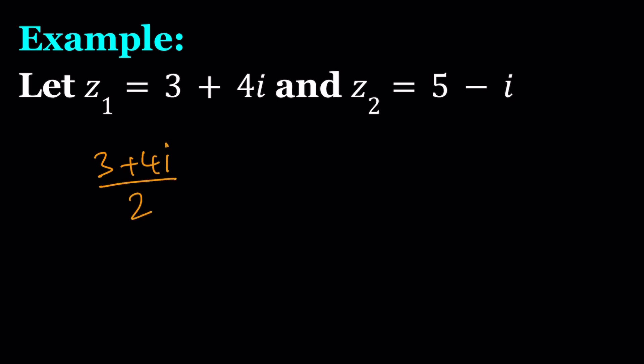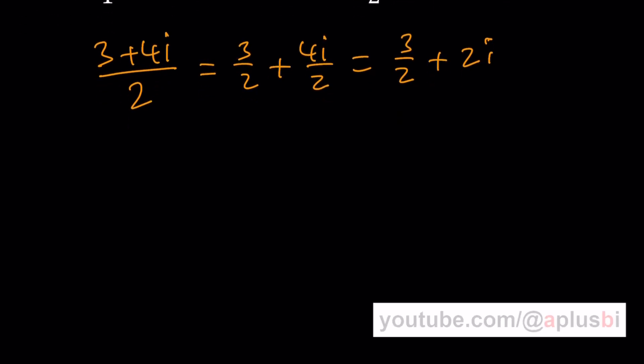For example, if you take something like 3 plus 4i and divide it by 2, what happens? Here's what happens: you can go ahead and separate it into 3 over 2 plus 4i over 2, and this just becomes 3 over 2 plus 2i. It becomes a complex number again, but the real part is cut in half and the imaginary part is also cut in half. That's pretty much what happens when you divide by a real number. In some cases it completely simplifies. Let's say we have 10 plus 5i and you're dividing by 5, then this just becomes 2 plus i, which is fairly simple.